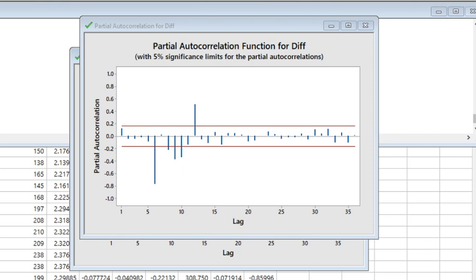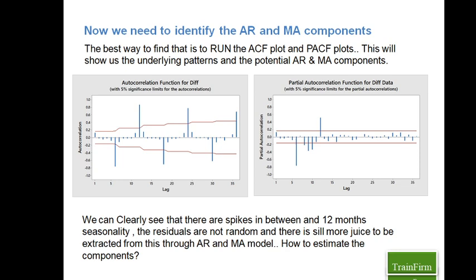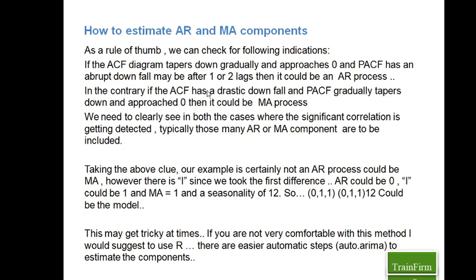Taking a closer look, we see no AR components, only one MA component and one integrated component. So the values of P, D, Q are: P equals 0 (no AR component), D equals 1 (first-level differencing), and Q equals 1 (one MA component at first lag). For the seasonal part, I took one difference to get rid of seasonality, and I see one MA component at the seasonal level. This is the non-seasonal part of the ARIMA model with PDQ, and this gets the seasonal PDQ part.